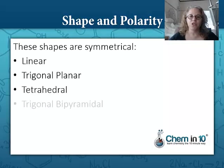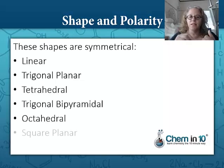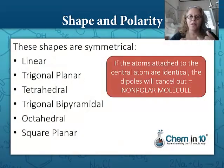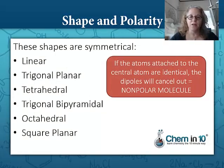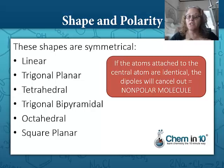To summarize, these shapes are symmetrical: the linear shape, the trigonal planar, the tetrahedral, the trigonal bipyramidal, the octahedral, and the square planar. If the atoms attached to the central atom are identical, the dipoles of these shapes will cancel out, making a nonpolar molecule.